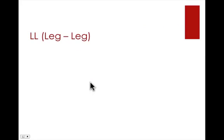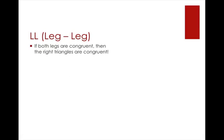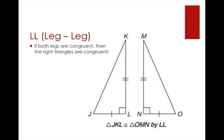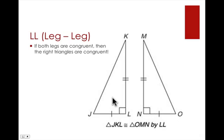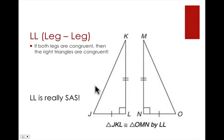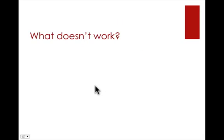The last theorem is LL — leg-leg. It means exactly what it sounds like: if you have both legs congruent, then the right triangles are congruent. For example, leg JL is congruent to leg ON, and leg KL is congruent to leg MN, so triangle JKL is congruent to triangle ONM by the LL theorem. If you look closely, you have side-angle-side, so LL is really just another way of saying SAS.